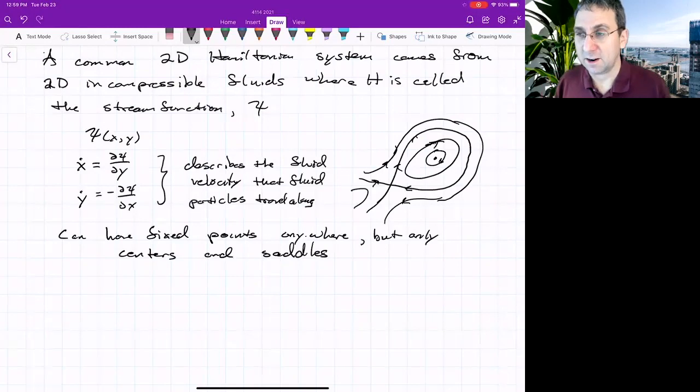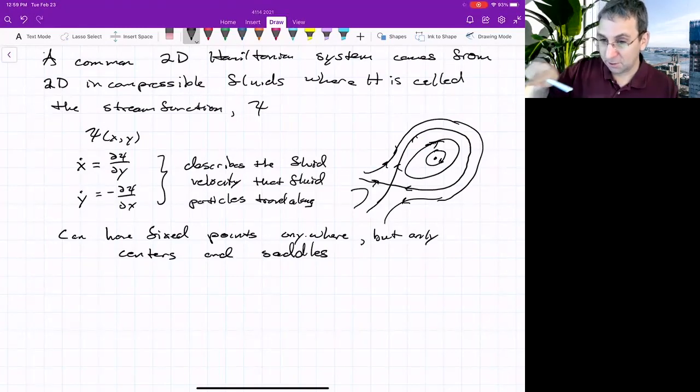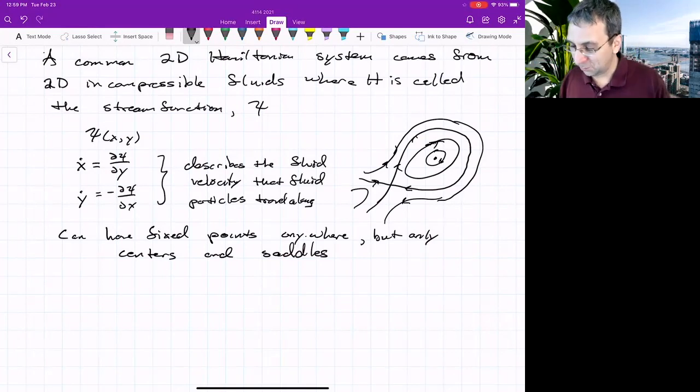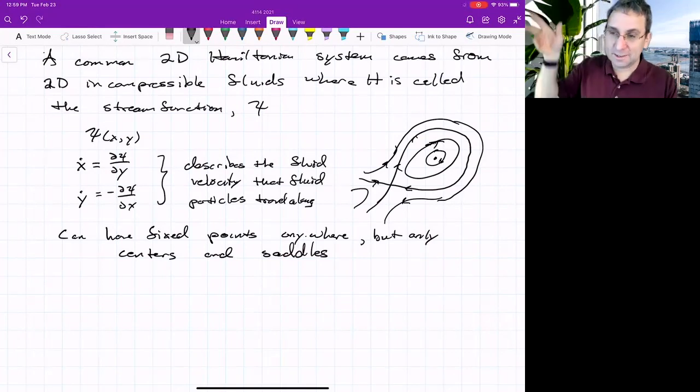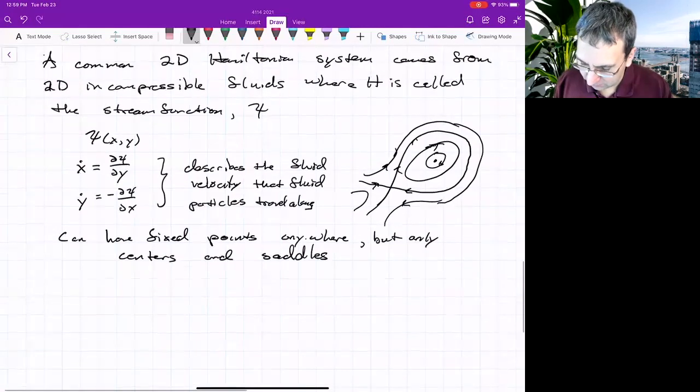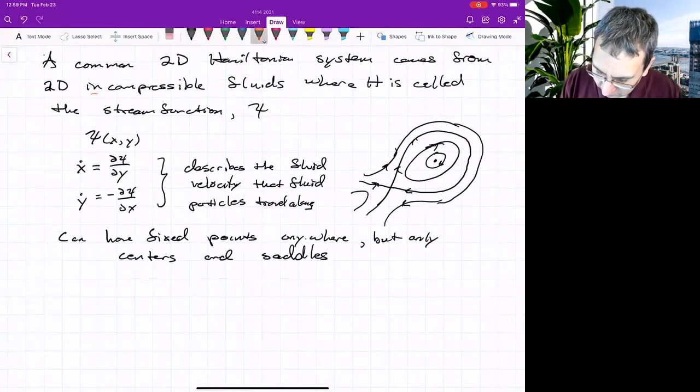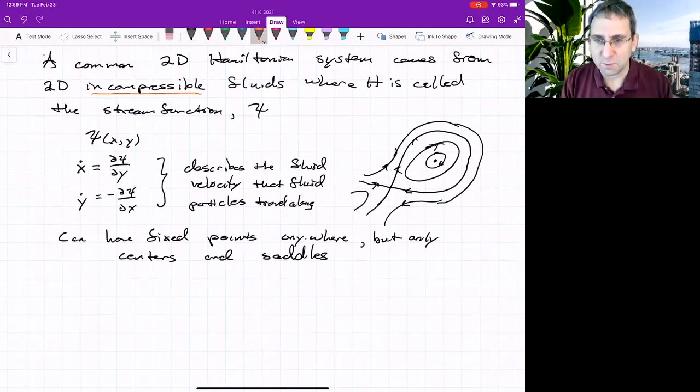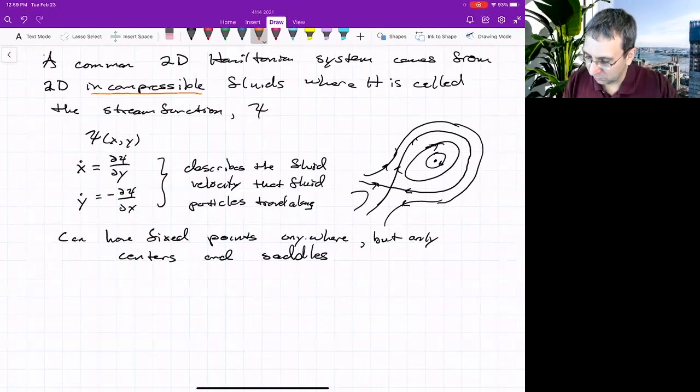There are no points that are asymptotically stable. So there's no places where things spiral in. And there's no points where everything's spiraling out. So there's no unstable or stable spirals, no unstable or stable nodes, only centers and saddles. And we can say something about why. The clue is kind of here when I said you could describe incompressible fluids this way. So what does it mean to describe incompressible fluids?